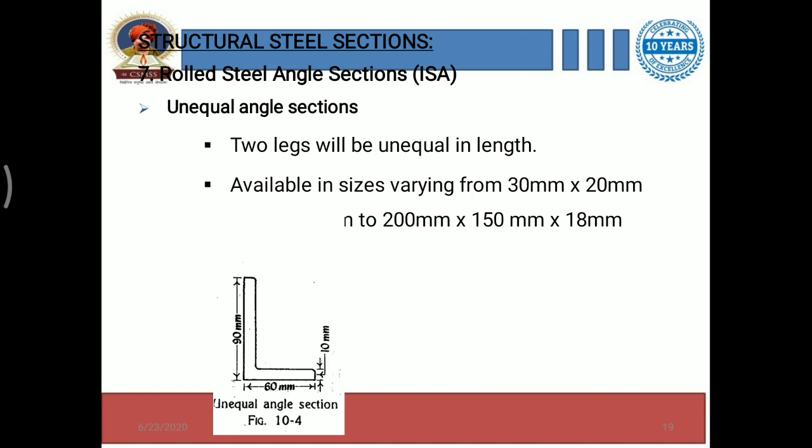Here, the length and width of these angles is always different. If the length and width were the same, it would become an equal angle section. In unequal angle sections, the length and width are always different — for example: 30 x 20 mm, 200 x 150 mm, 200 x 175 mm, 100 mm x 75 mm x 18 mm, and 100 mm x 75 mm x 10 mm, and likewise.